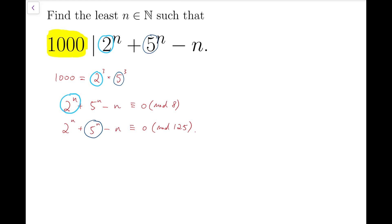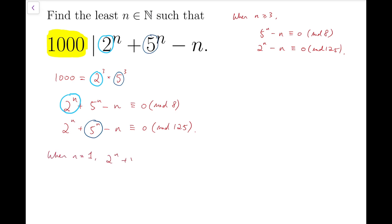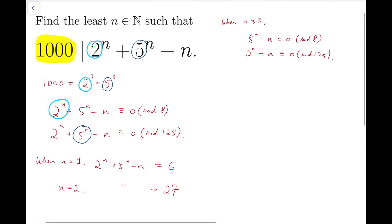For example, for the first case when n is at least 3, I can say that 5 to the n minus n is congruent to 0 mod 8, and 2 to the n minus n is congruent to 0 mod 125. Before going further, let me settle the case where n equals 1 and 2. When n equals 1 and 2, these expressions are not even close to 1,000 — in fact they equal 6 and 27 respectively, so both are less than 1,000. Therefore, no solution for n less than 3.